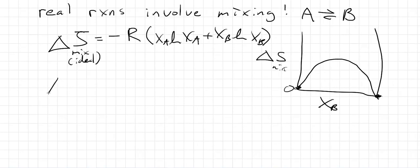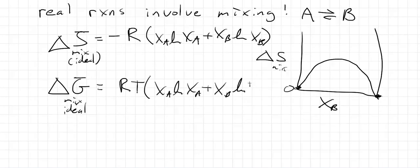We can rewrite this if we wanted as the delta G of mixing for an ideal mixture. And we know that is just equal to, if we were on a per mole basis, that would just be RT times xA log xA plus xB log of xB.